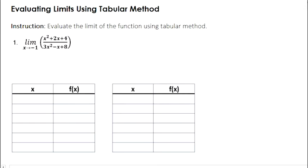In using the tabular method, we need to create or draw two tables, and then we will assign values of x from the left and from the right of negative 1.